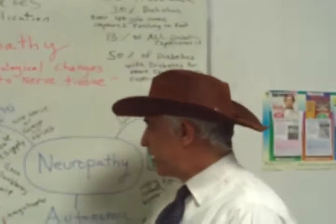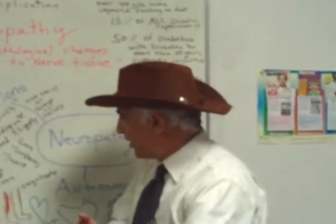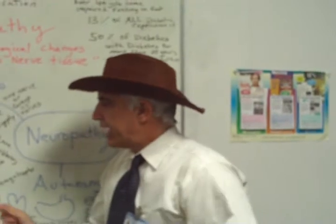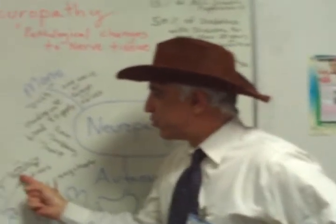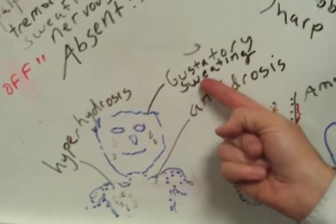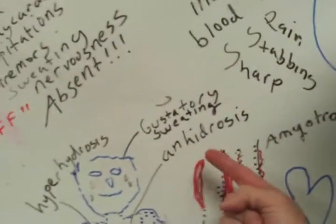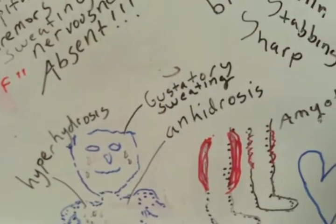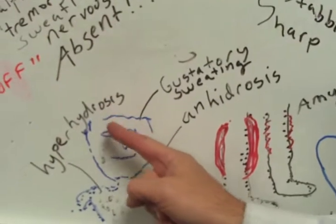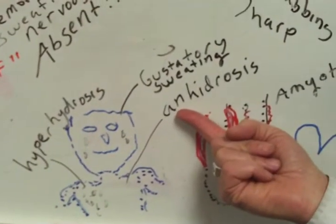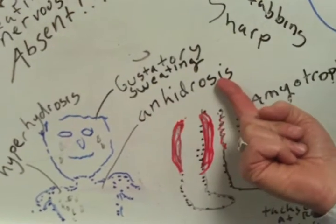Another interesting component of autonomic neuropathy is the issue of sweating. You may have gustatory sweating — you eat certain foods and all of a sudden you start sweating. Or in your body you might have areas of excessive sweating, called hyperhidrosis. At the same time, you may have areas where there's no sweating at all, called anhidrosis.